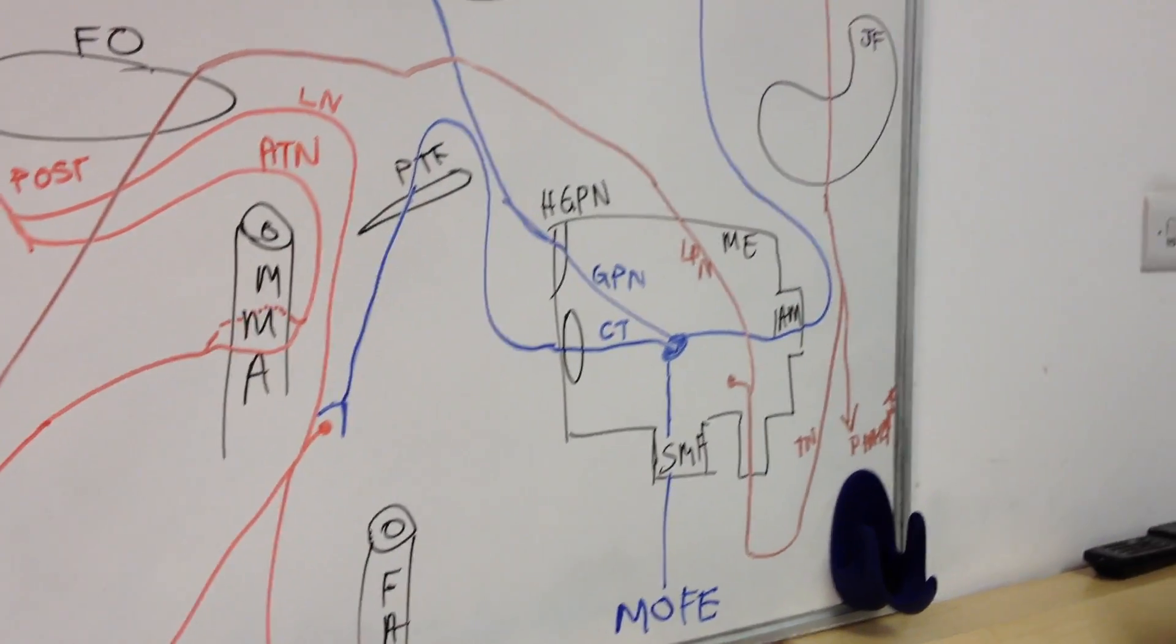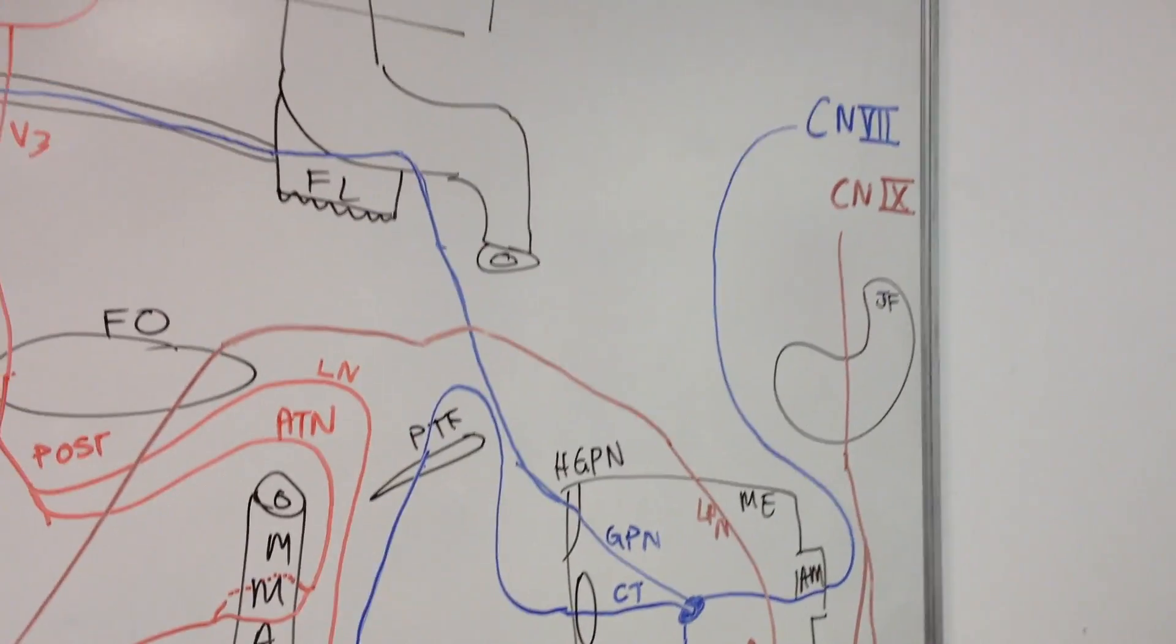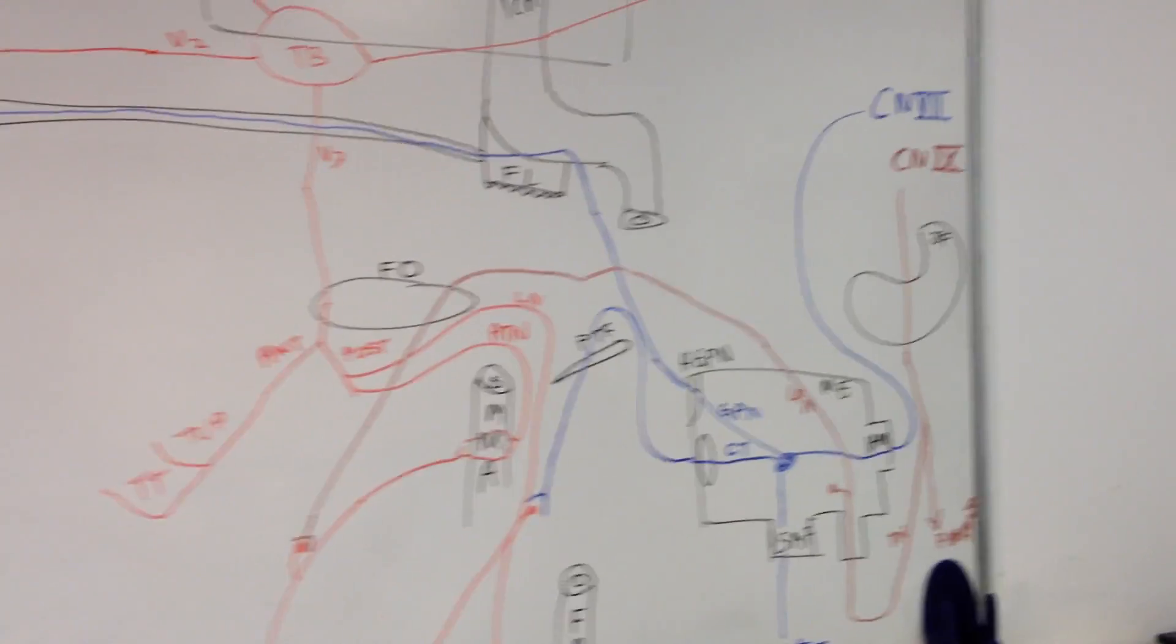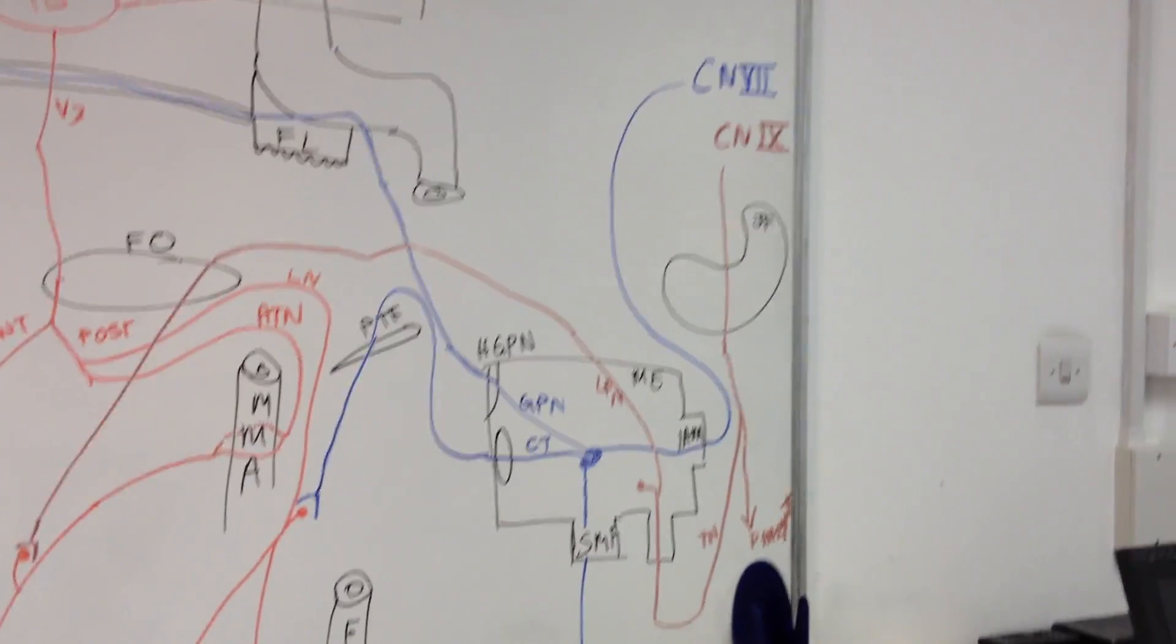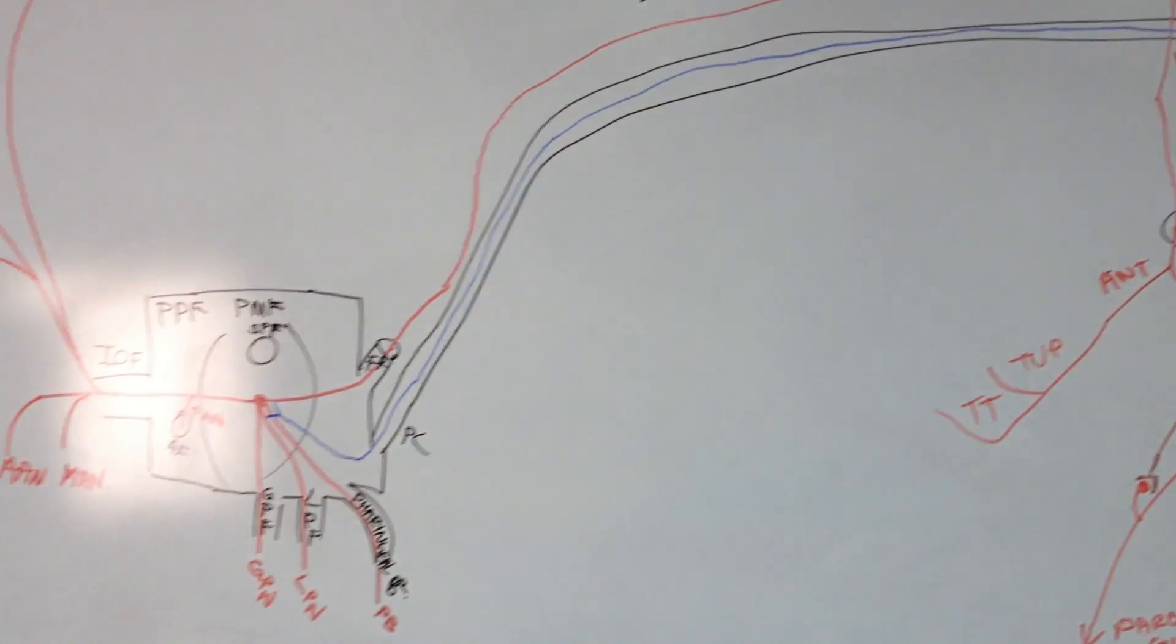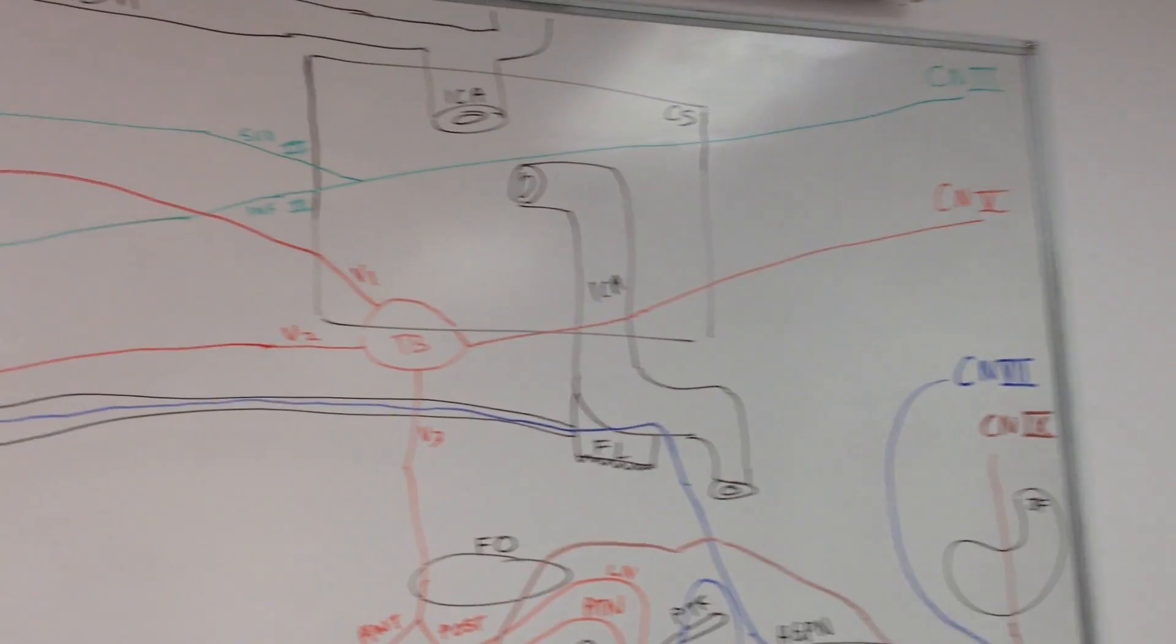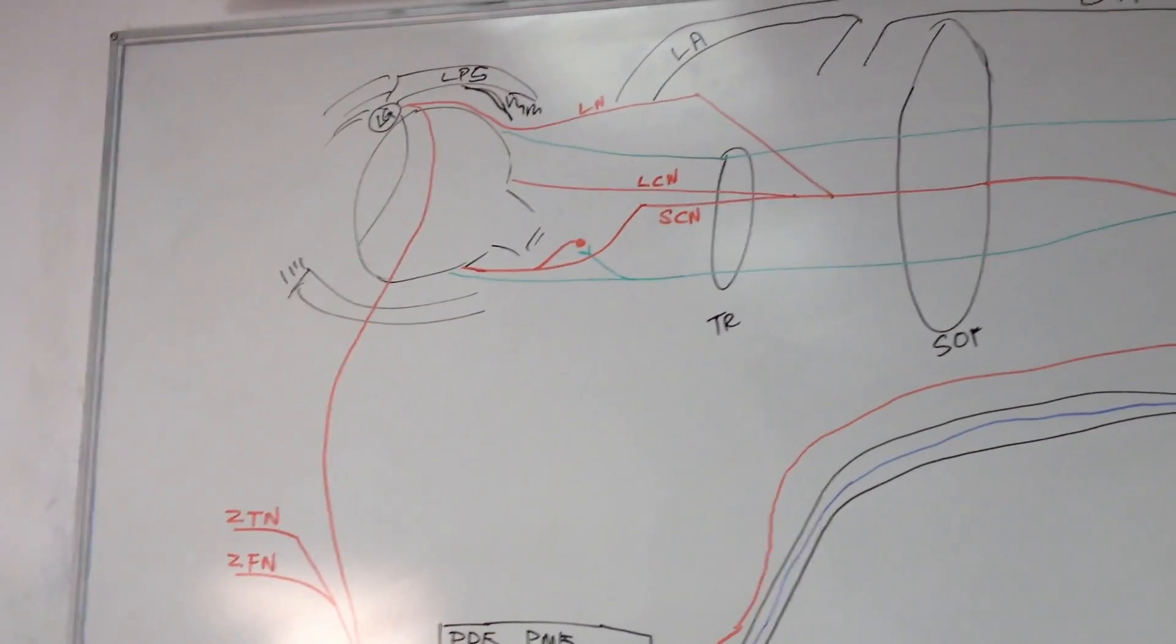So what you can see here is we now have on the board cranial nerve three, cranial nerve five, cranial nerve seven, and cranial nerve nine. This is the full map of the anatomic arrangement of the cranial nerves which are responsible or associated with the parasympathetic carriage.